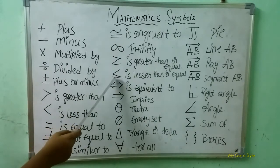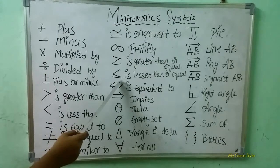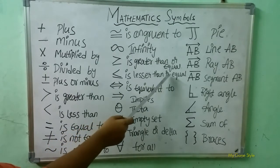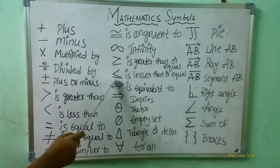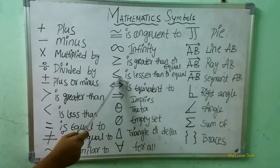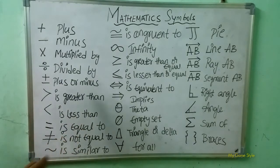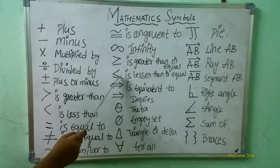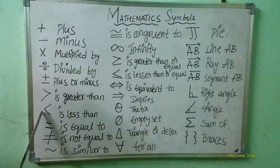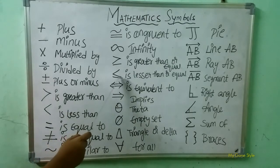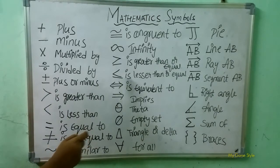Next, here what is this symbol? This is a less than or equal symbol. Here let's see — here it is also a less than symbol. Here what is the difference children? Here this is only a less than symbol; here less than or equal symbol. This is the difference.